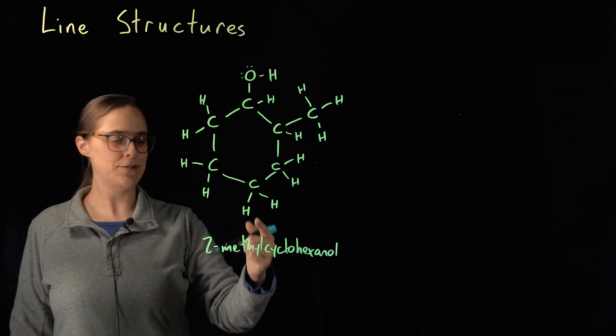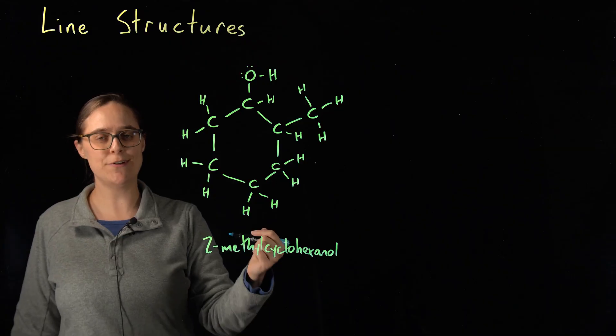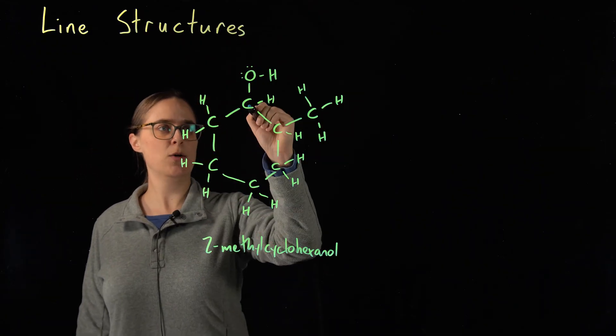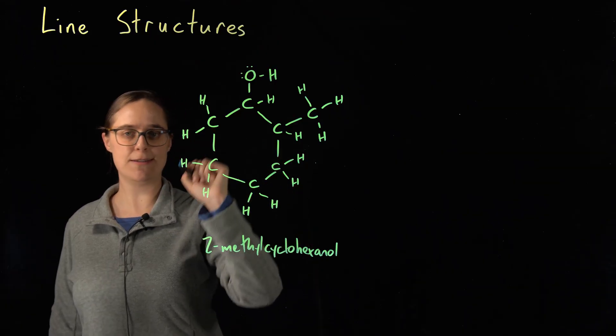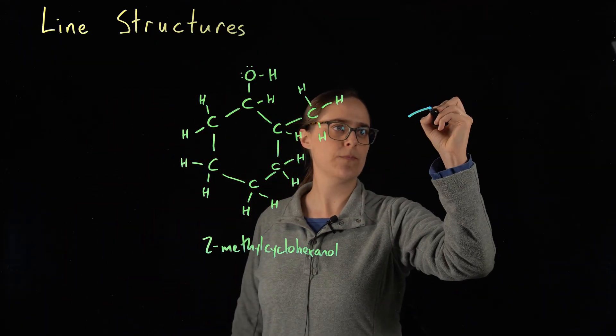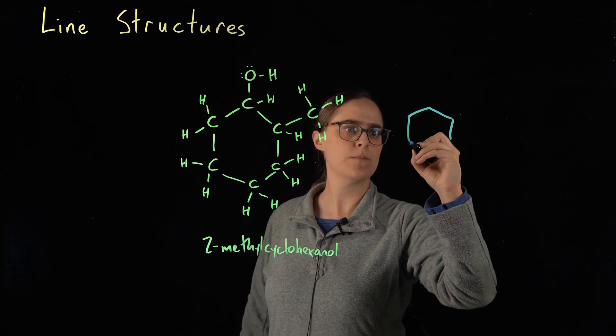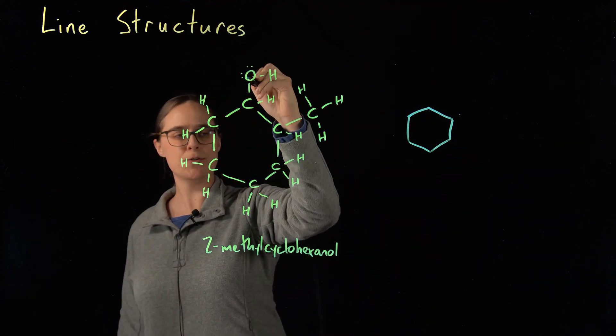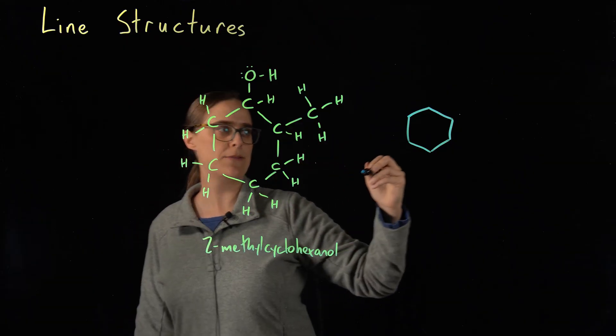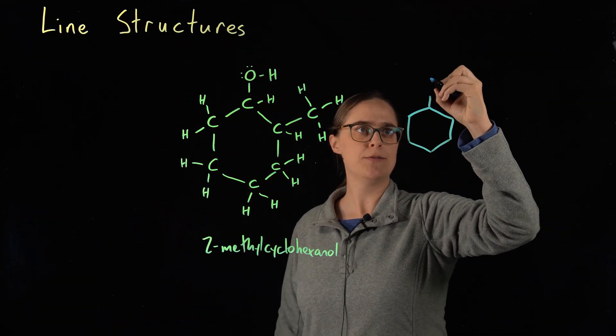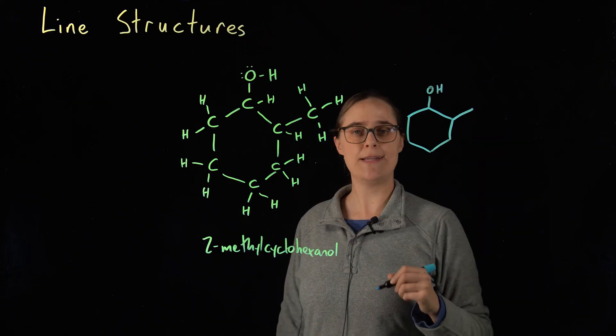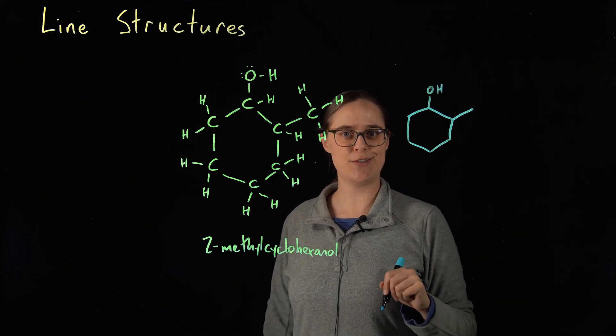Problem three. This is a Lewis structure for 2-methylcyclohexanol. Let's draw the line structure. So we have six carbons in a ring. One, two, three, four, five, six. Carbon number one has an OH group. Carbon two has a methyl group, a CH3 group. So carbon one, I need to draw OH. Carbon two, need a line for a methyl group. This is our line structure.